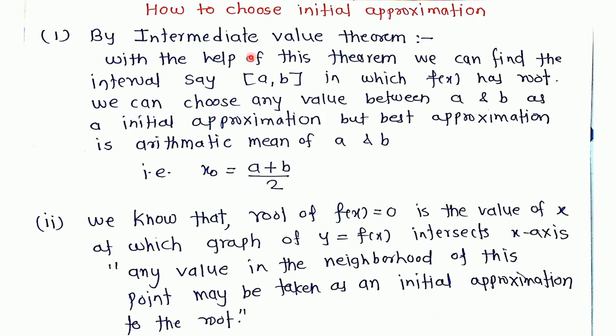First one is by Intermediate Value Theorem. With the help of this theorem we can find the interval [a, b] in which f(x) has a root. We can choose any value between a and b as the initial approximation, but the best approximation is the arithmetic mean of a and b, that is (a + b)/2.